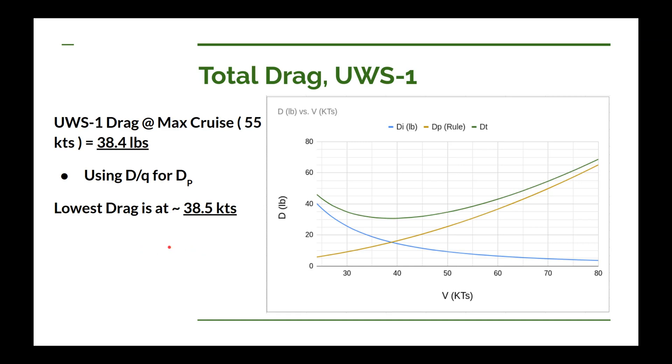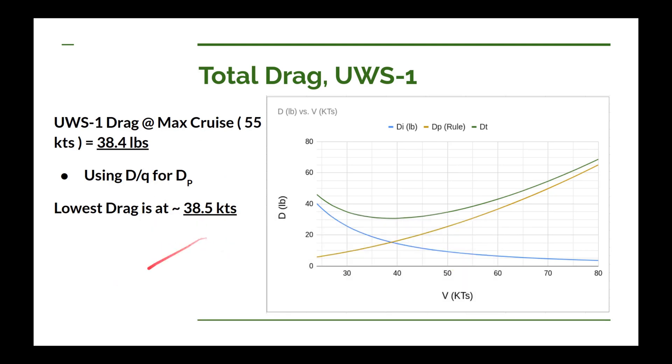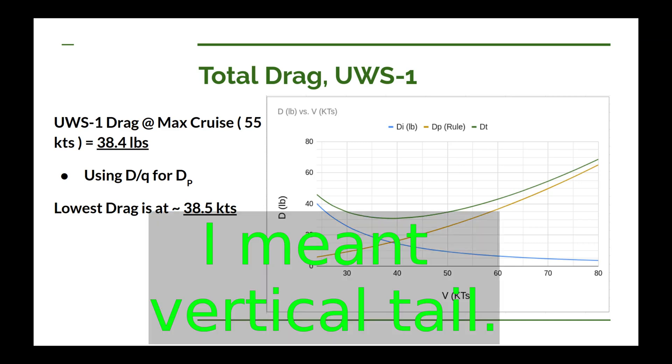I can also do some calculations to come up with the best angle of climb, then do a drag calculation at that best angle of climb. With that, I'll be able to figure out the yawing situation on the airplane when one engine fails and the other is countered by the vertical stabilizer, and I'll be able to calculate the size needed for that vertical stabilizer. Now we have the drag value for the UWS-1 at maximum cruise, which will allow us to calculate drag at maximum climb angle — probably our most adverse engine-out situation — and then we can start working on that vertical tail design.